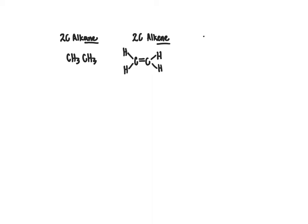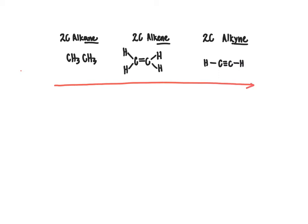Then we get into an even more hydrogen-deficient molecule group, which would be the alkyne. With the alkyne, since we have a carbon-carbon triple bond, in order to get the full octet around each of those carbons, we can only have one hydrogen bonded there. So going from left to right, we are dealing with an increasing extent of hydrogen deficiency.